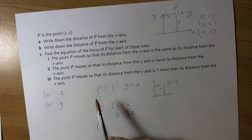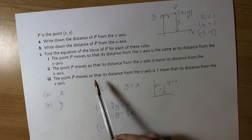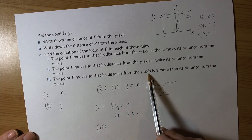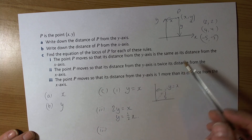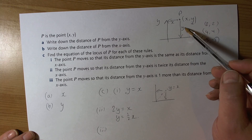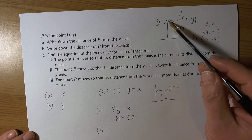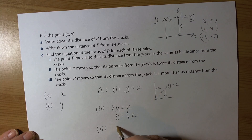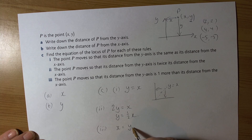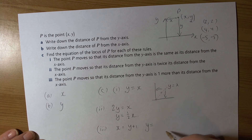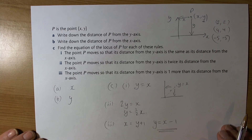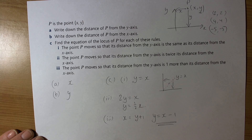Condition 3: P moves so its distance from the y-axis is one more than its distance from the x-axis. So x = y + 1. Rearranging to make y the subject: y = x − 1. Those are examples of locus equations for points moving according to given rules on a 2D coordinate grid.